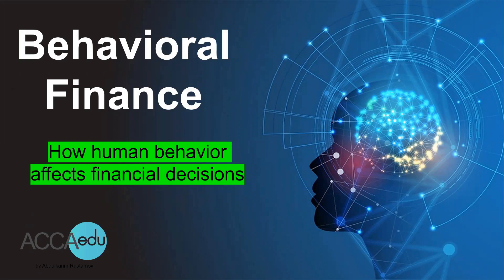Assalamu alaikum dear subscribers, today we're talking about behavioral finance, one of the most theoretical aspects in financial management F9 ACCA paper. Behavioral finance is how human behavior affects our financial decisions — it's not about the formulas or laws of financing logic, but about our behavior, our mood, and some inconceivable or inexplicable events which lead to either rational or irrational decision making.